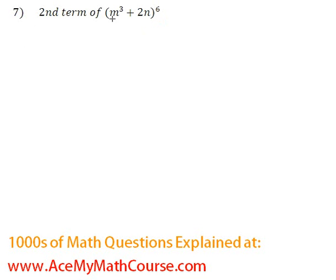Okay, so let's find the second term of this expansion: (m³ + 2n)^6.